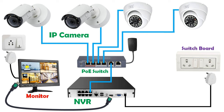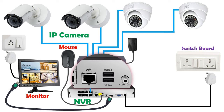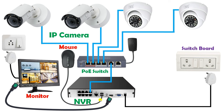Now in this monitor some programming and settings are also required, like selection of footage. For all these we need a mouse. Take the wire of the mouse and connect it to the USB port on the NVR. With these USB ports we can also connect a pendrive — if you want to store any data, you can connect a pendrive directly and store the recordings in it.